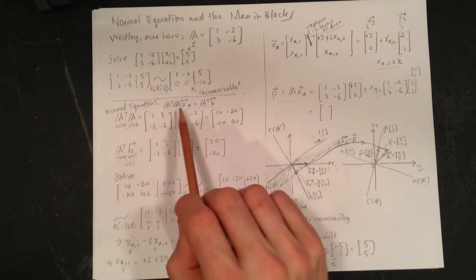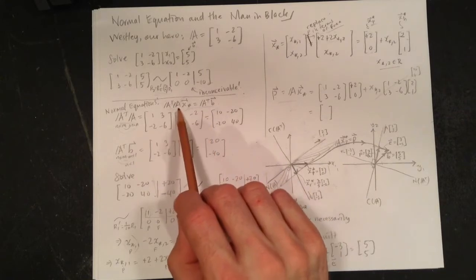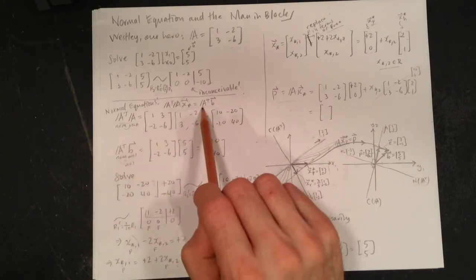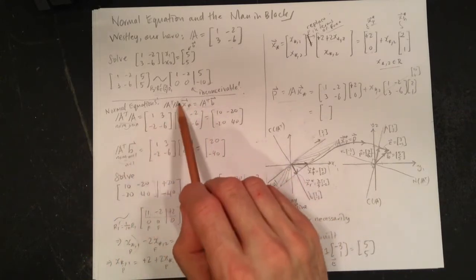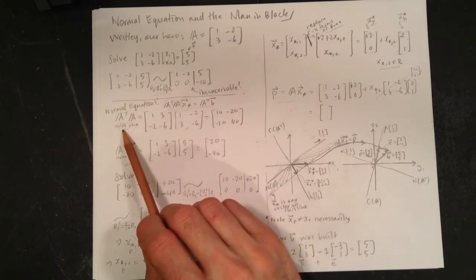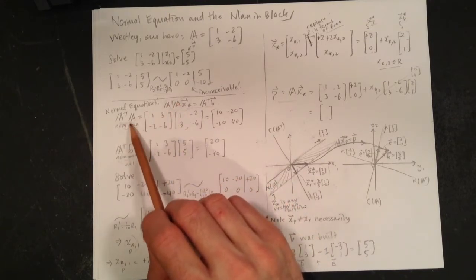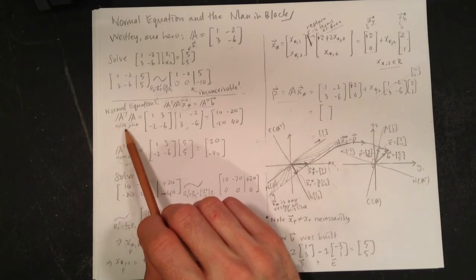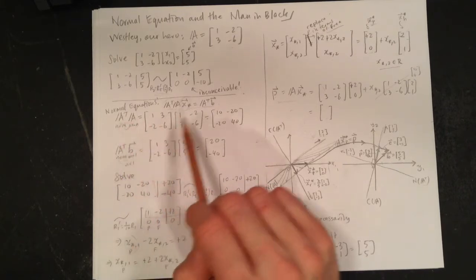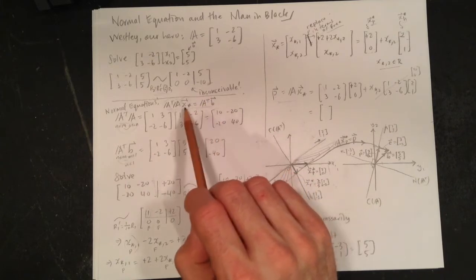We have this formula: A^T A x* = A^T b. This blob here is an n by n matrix—it could in general be n by m, but here it's 2 by 2. This will be an n by 1 vector and this is an n by 1 vector. We're solving this problem now.